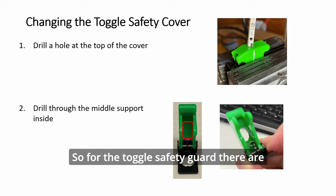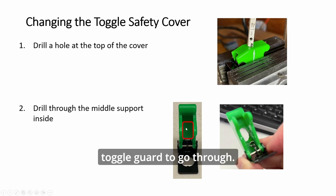So for the toggle safety guard, there are two things we need to do. One is to drill a hole here for the toggle guard to go through. The top of the toggle, if you don't do this, when you close the cover, it will push the toggle back down. So as in the real thing, there is an opening. Actually, the opening, it goes all the way back. So you first drill a hole and then you have to pull out whatever metal is hidden in there like this.